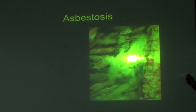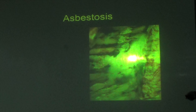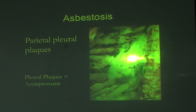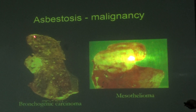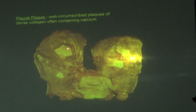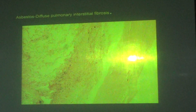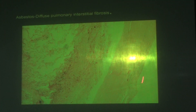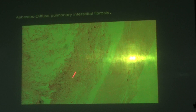Pleural thickening and parietal pleural plaques are characteristic of asbestosis. Over time, asbestos acts as a tumor initiator and promoter, causing bronchogenic carcinoma in the lung parenchyma and mesothelioma in the pleura. The pleural surface shows well-circumscribed dense plaques composed mainly of collagen. Microscopically, the alveolar interstitium shows interstitial fibrosis, making it a diffuse pulmonary fibrosis.